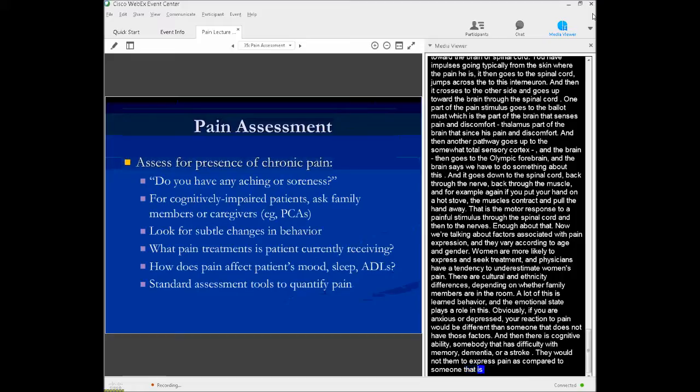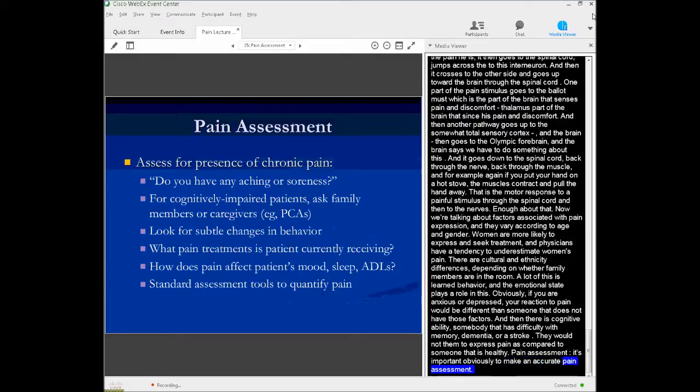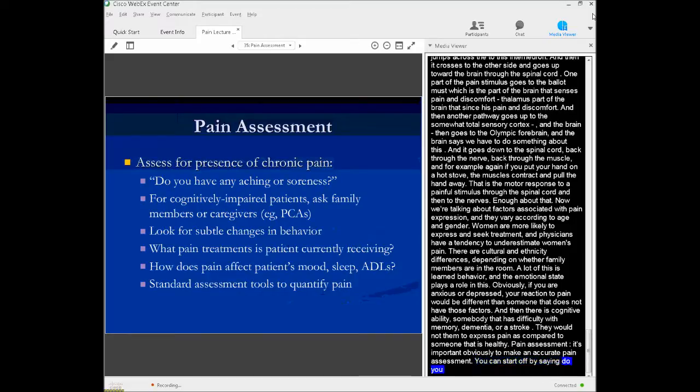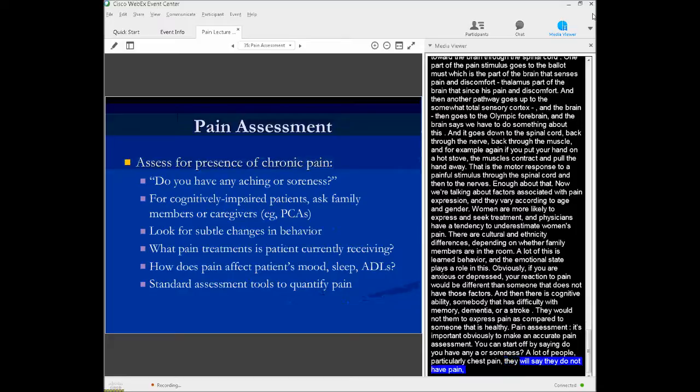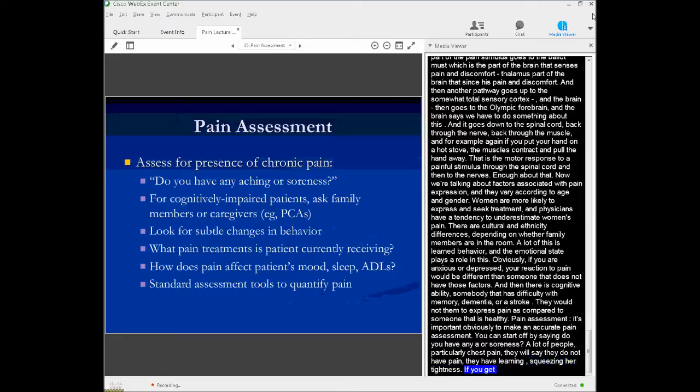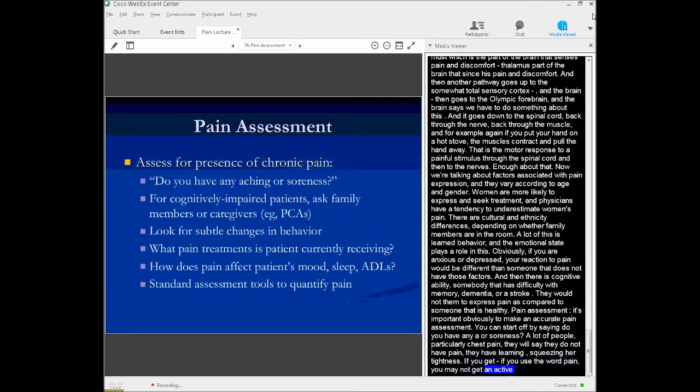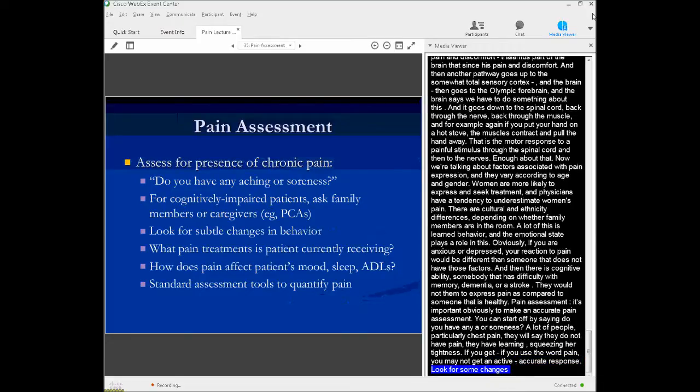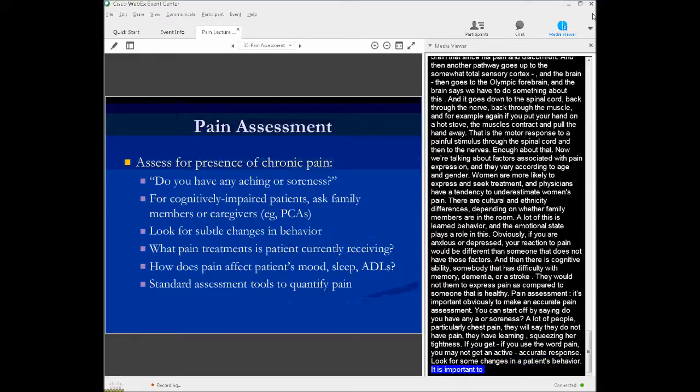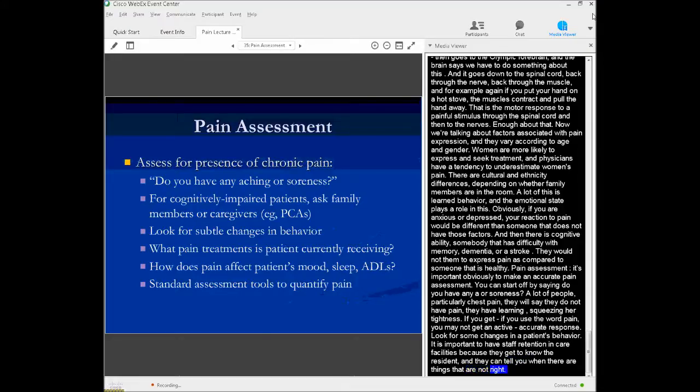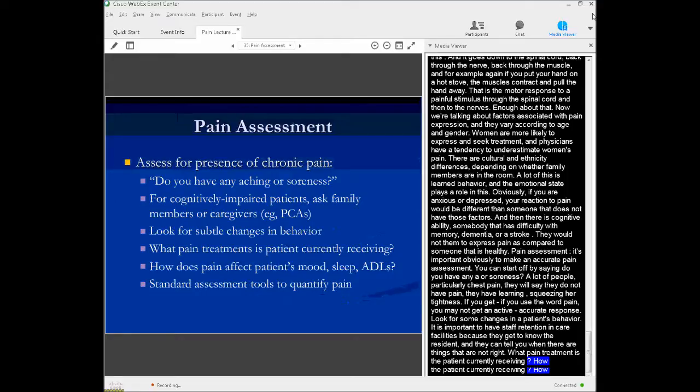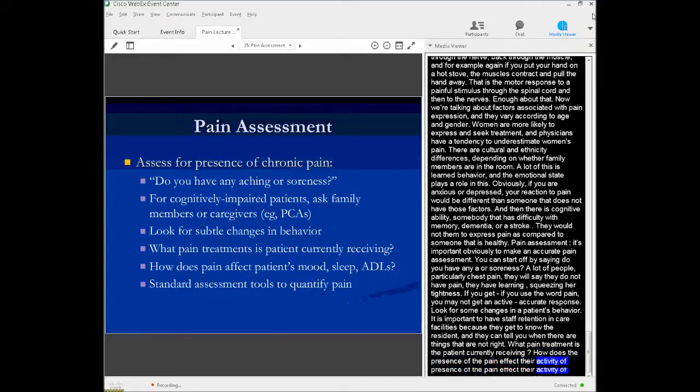Pain assessment. It's important, obviously, to make an accurate pain assessment. You can start off not by saying do you have pain, but maybe it's better sometimes to say, do you have any ache? Do you have any soreness? Do you have any discomfort anywhere? Because a lot of people, particularly chest pain, will say they don't have pain - they have burning, they have squeezing, they have tightness. So if you use the word pain, you may not get an accurate response to the discomfort. For patients who are cognitively impaired, you may want to ask caregivers or family members. You want to look for subtle changes in their behavior. Again, this is where it's important to have staff retention in extended care facilities because they get to know their residents. They can tell you when there's things that just aren't right that would be a clue that they might be having a painful condition somewhere. What pain treatments is the patient currently receiving and how does the presence of their pain affect their activities of living, sleeping, their mood.